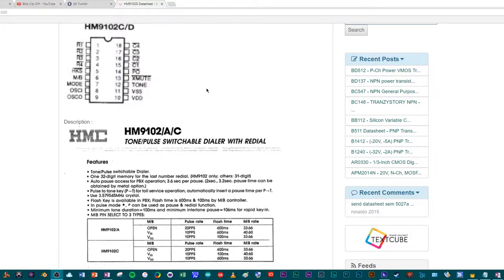So the HM9102D chip, I thought, was a multiplexer based on how the pinout looked. But it's actually a tone pulse switchable dialer with redial. So if you see here on the data sheet that I was able to find features, a tone pulse switchable dialer, as the name implies.